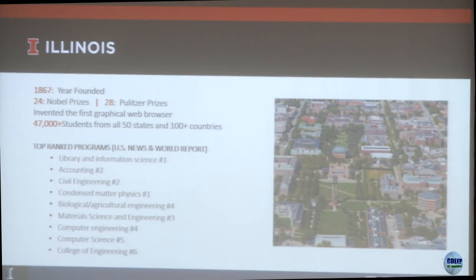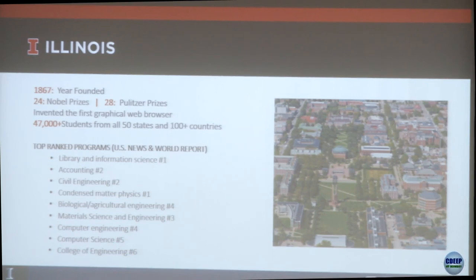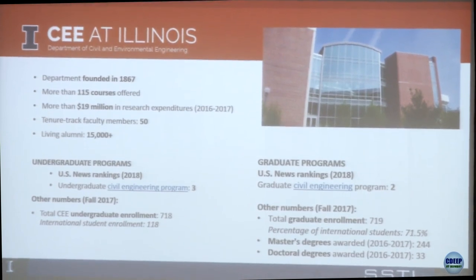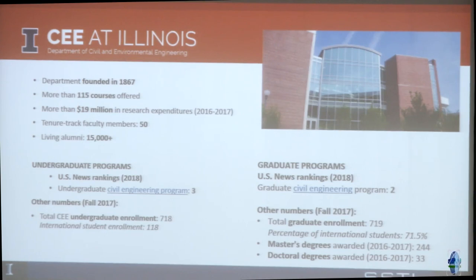That's not exactly true, because any place you put 40-some thousand students there's going to be a lot of things to do. In the Department of Civil Engineering we have one of the larger programs in the United States with 50-some faculty members, about 700 undergraduate students and 700 graduate students, 71 percent of which are international students.